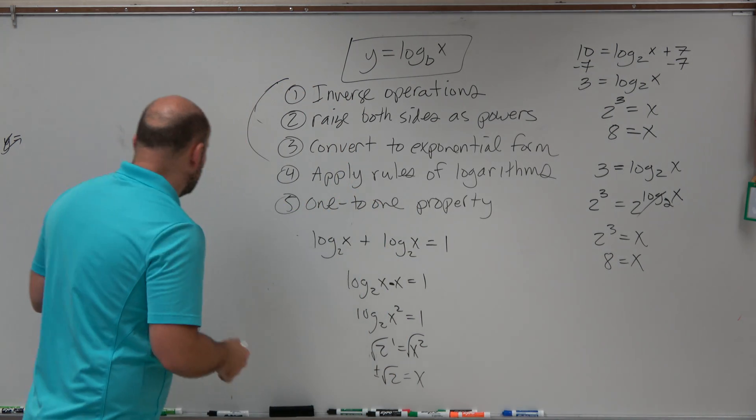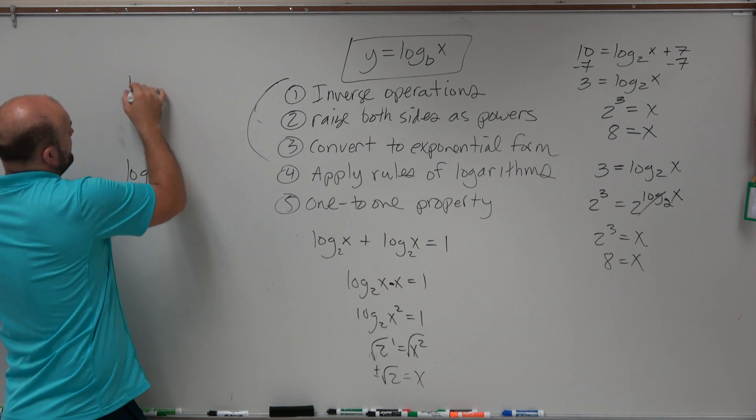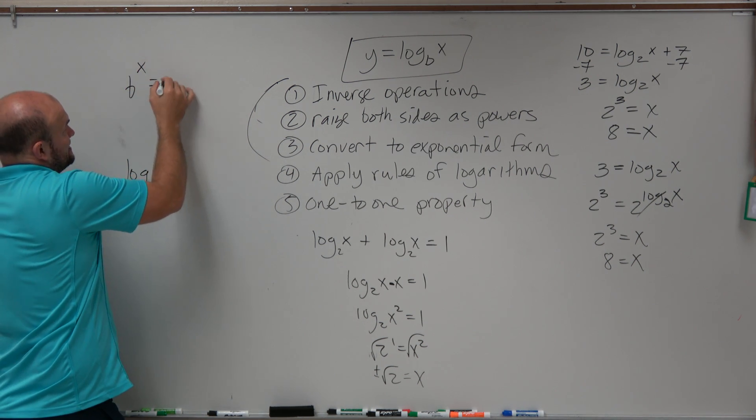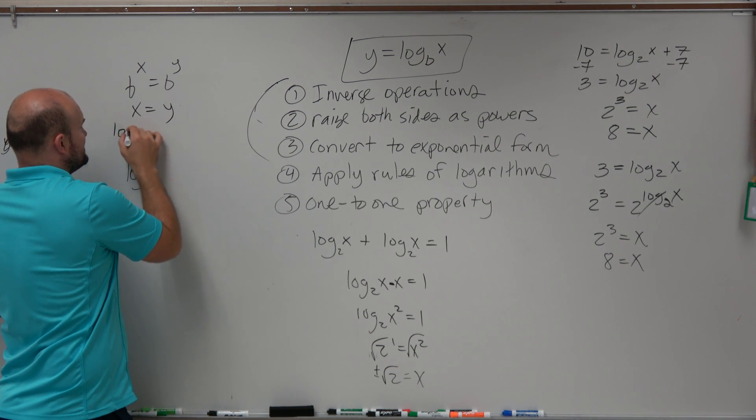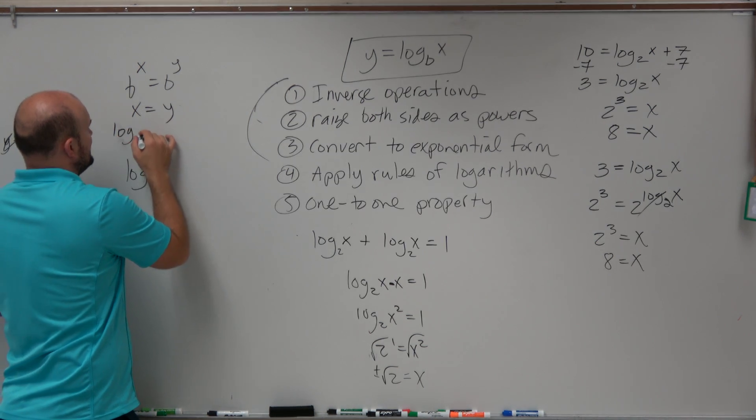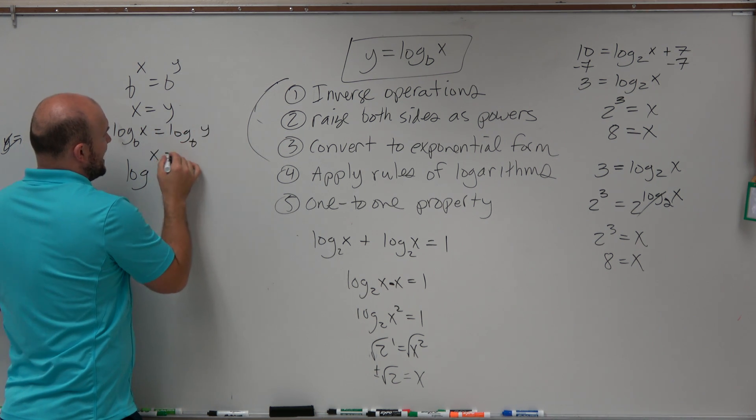Last but not least is the one-to-one property. And this actually is going to be probably your easiest. Remember the one-to-one property for exponential. If you have b to the x equals b to the y, that means x is equal to y. Well, the same thing is true if you have log base b of x is equal to log base b of y, then still x is equal to y.